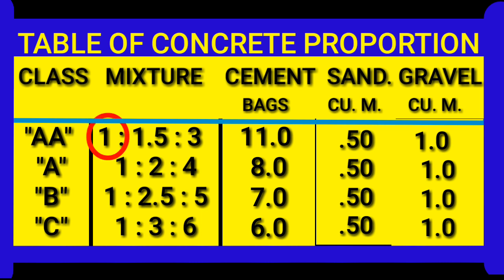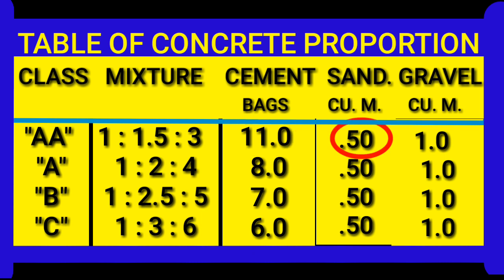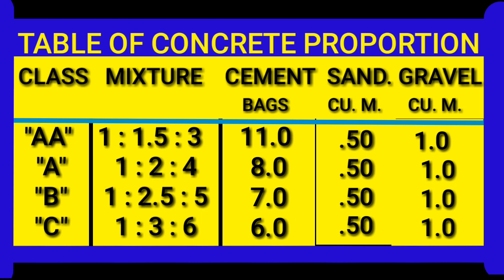In this mixture, 1 stands for the number of bags of cement, 1.5 stands for the amount of sand in cubic feet, and 3 stands for the amount of gravel in cubic feet. Please note: 11.0 bags of cement, 0.50 cubic meters for sand, and 1.0 cubic meter for gravel — I will be explaining these numbers later on. We also have Class A, in which the mixture is 1 is to 2 is to 4, standing for cement, sand, and gravel respectively.